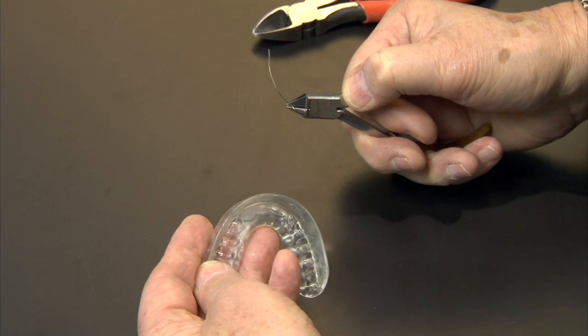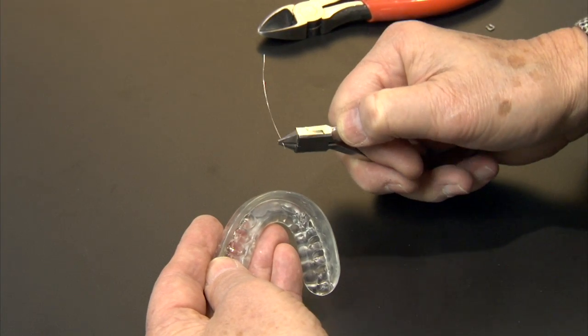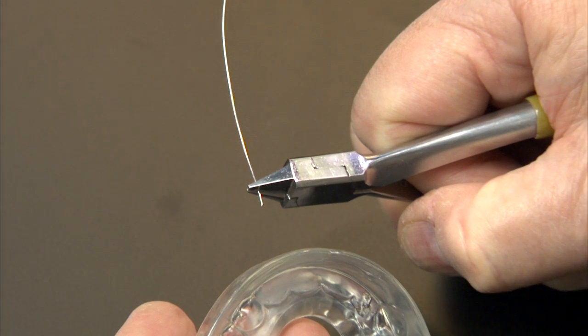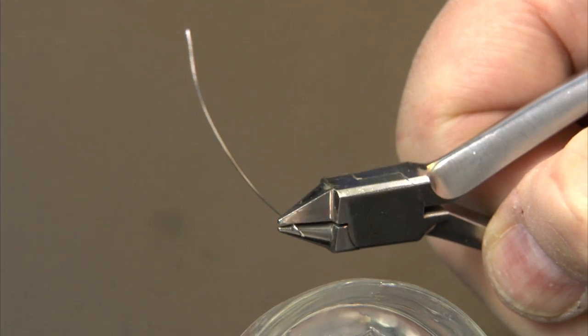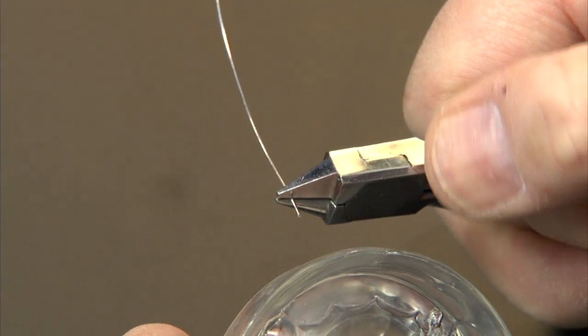We're going to show you how to put a labialingual wire into an appliance. We grab a 20,000 steel wire, half millimeter wire, with a 139 plier, leaving about two or three millimeters out of the plier.